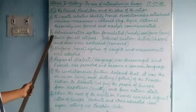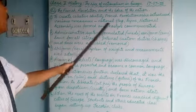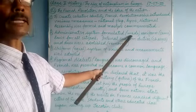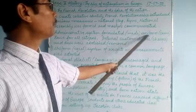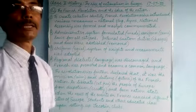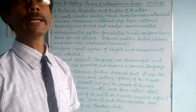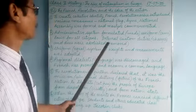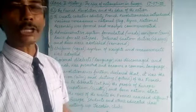Number two: the administrative system. The national assembly was formed and they formulated uniform, equal laws for all citizens. Before this, it was not like that — we have learned that there were three classes and equality was not there.